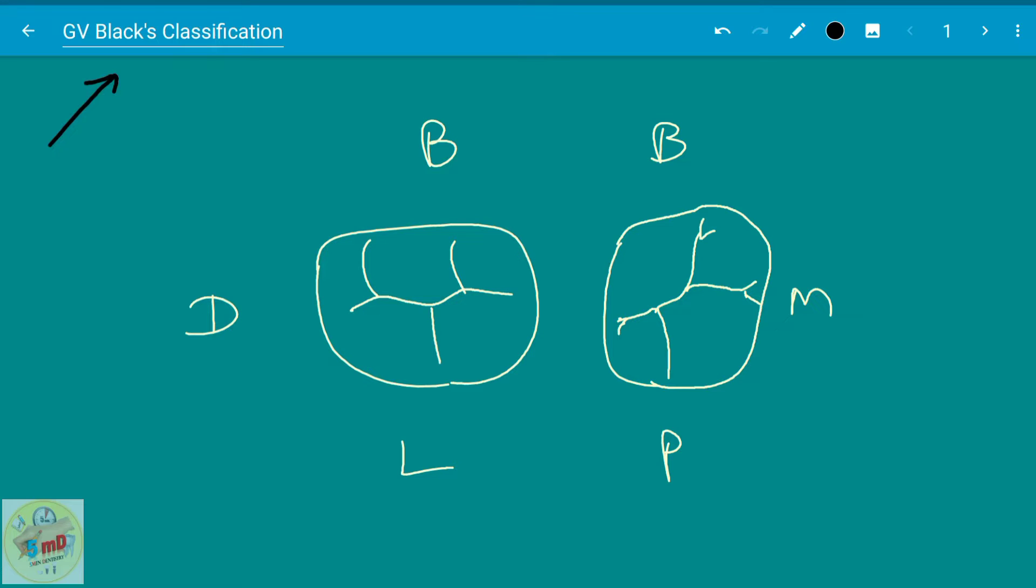They may conduct a viva on this while preparing cavity preparation, and can also ask questions before signing. This is common, but before memorizing GV Black's classification, I feel it is better and a must to understand and then learn, so instead of blindly memorizing, let us understand with pictures in this presentation.